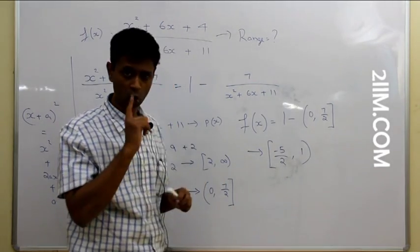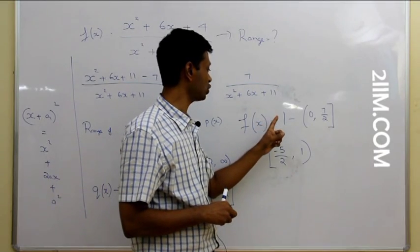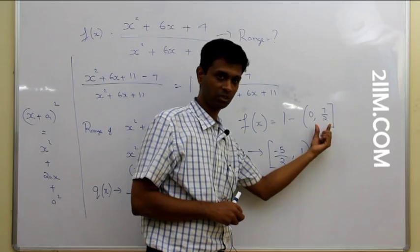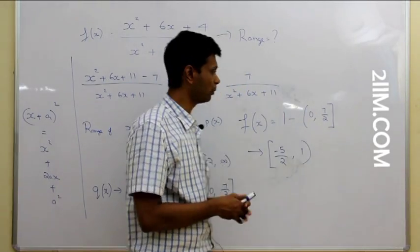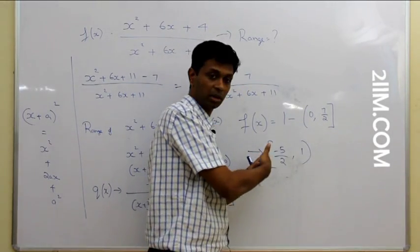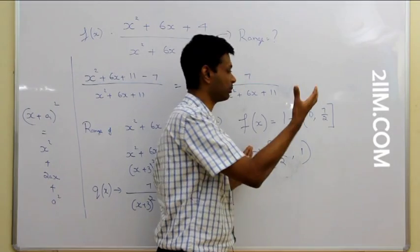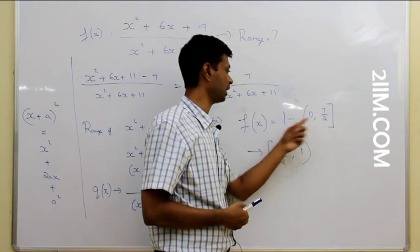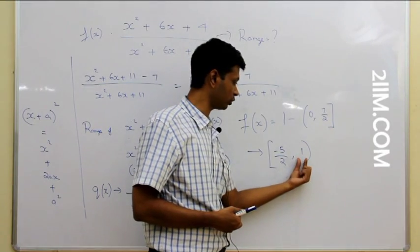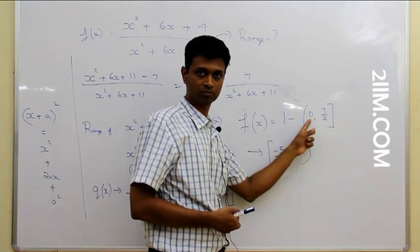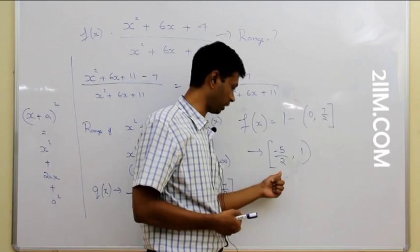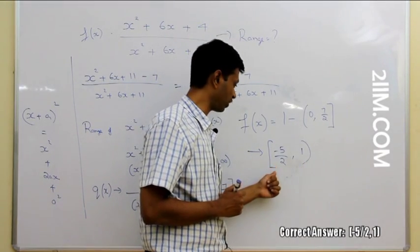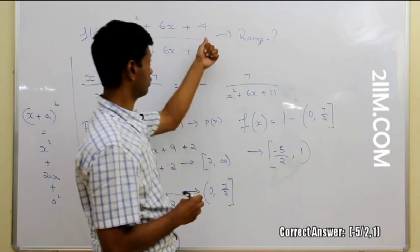Let me go over this last step again. The range of f(x) is 1 minus a function that ranges from 0 to 7/2. The more I subtract, the smaller my number will be; the less I subtract, the higher it will be. So the lower bound is when I subtract the maximum — 1 minus 7/2 gives −5/2. The upper bound is when I subtract the minimum — 1 minus 0 gives 1. So the range goes from −5/2 to 1.